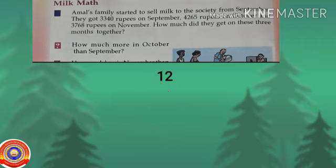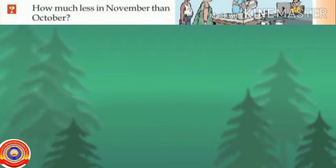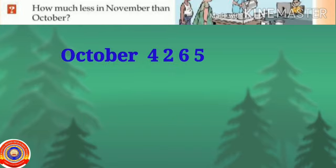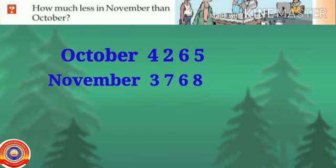The next question: how much less amount got in November than October? The amount got in October was 4265 rupees. The amount got in November was 3768 rupees. To find the less amount got in November than October, subtract 3768 from 4265.